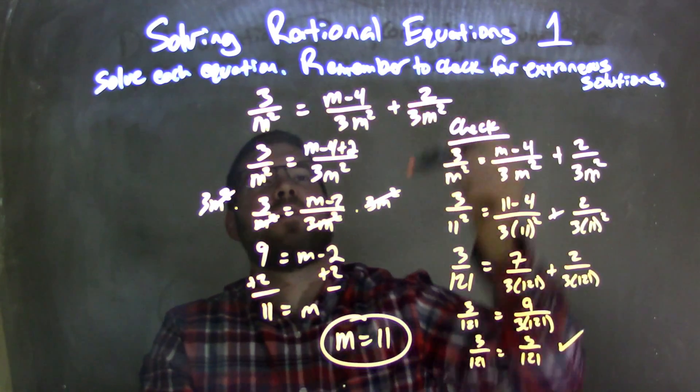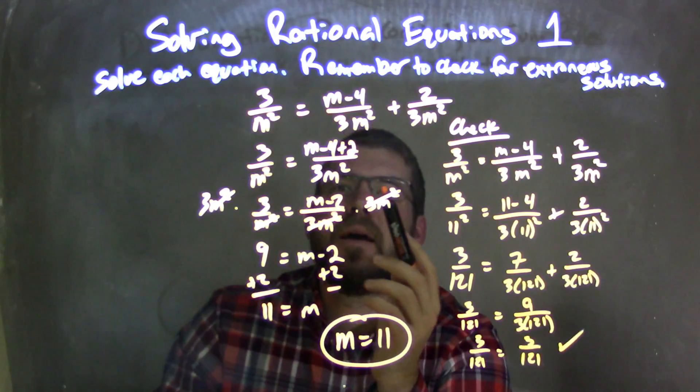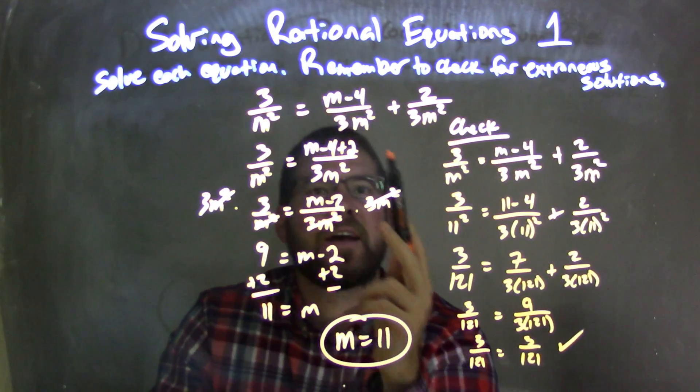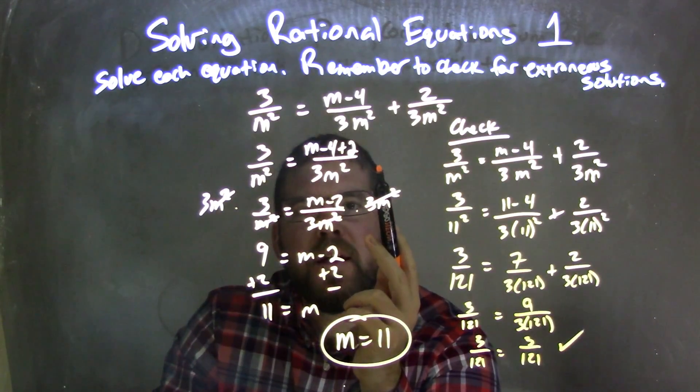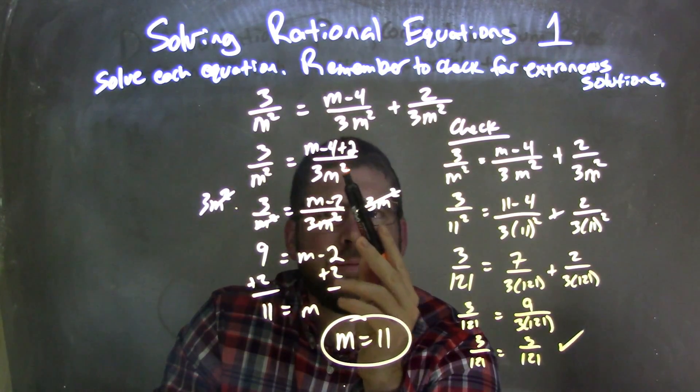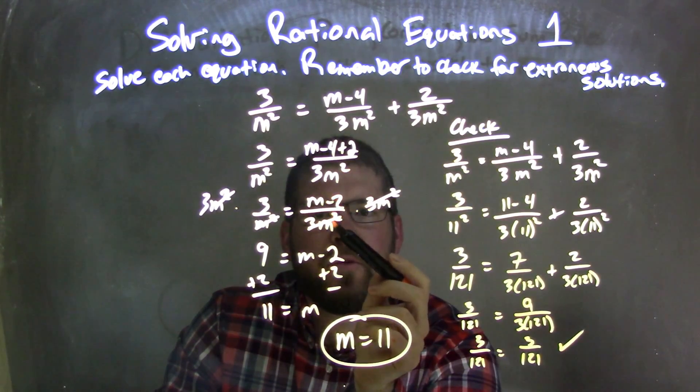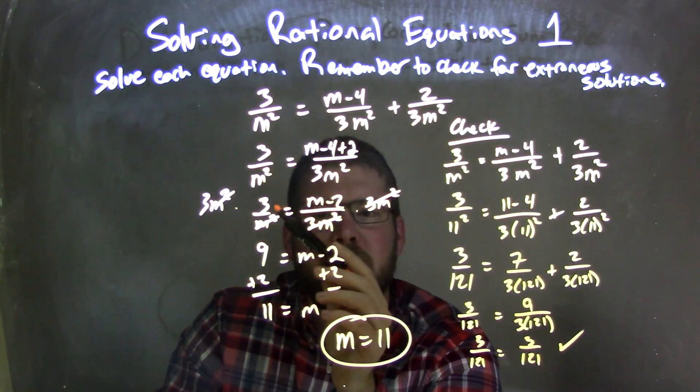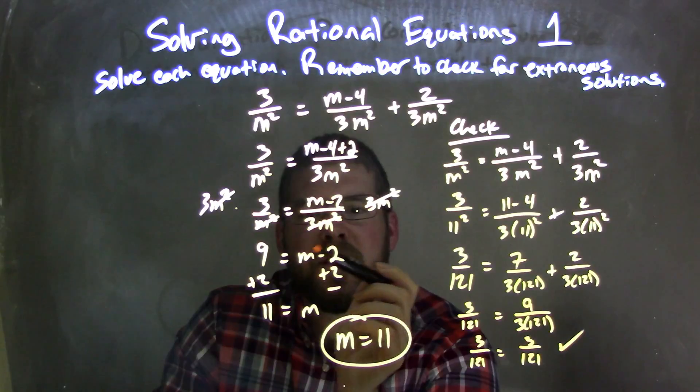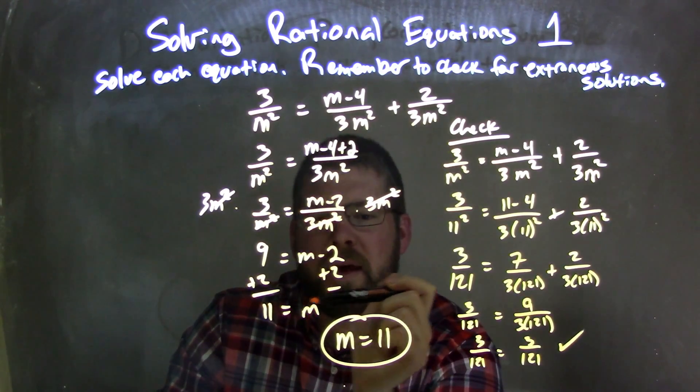So let's recap. We're given our equation. What I did was I combined the fractions here on the right because of the same base. Then I simplified up top, giving me m minus 2 over 3m squared on the right and 3 over m squared on the left. I'm multiplying on both sides by 3m squared, giving me 9 on the left and m minus 2 on the right. Then I solved for m and got m equals 11.